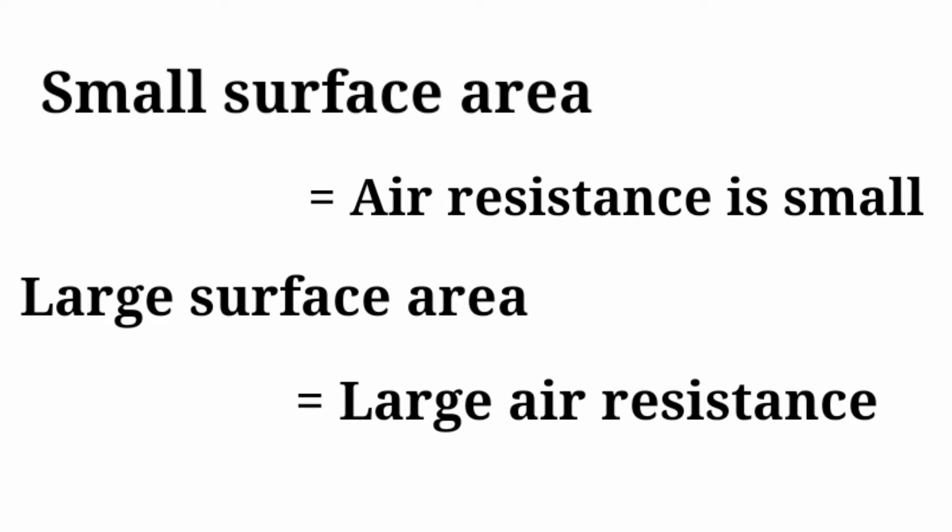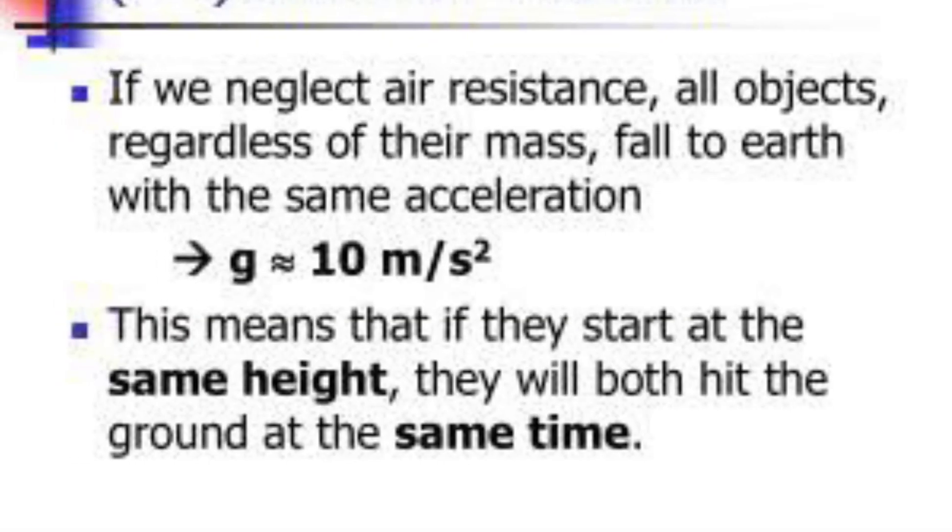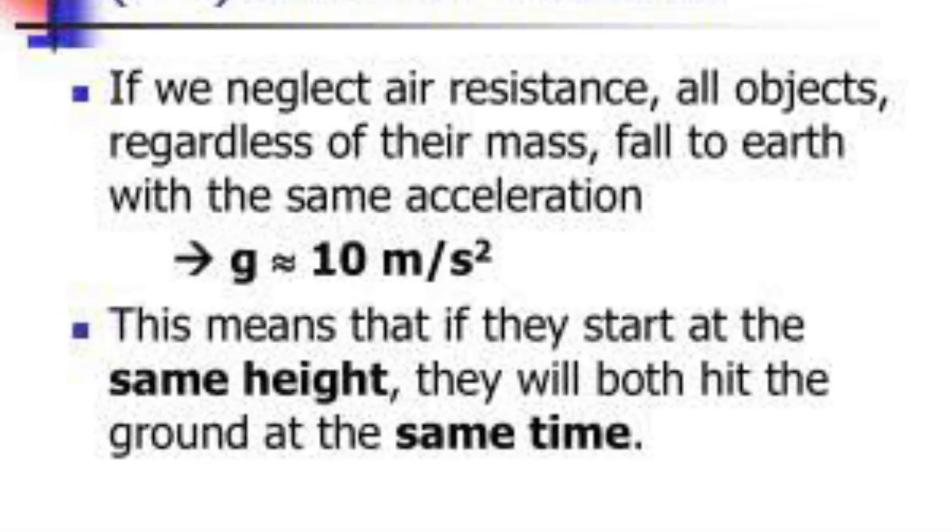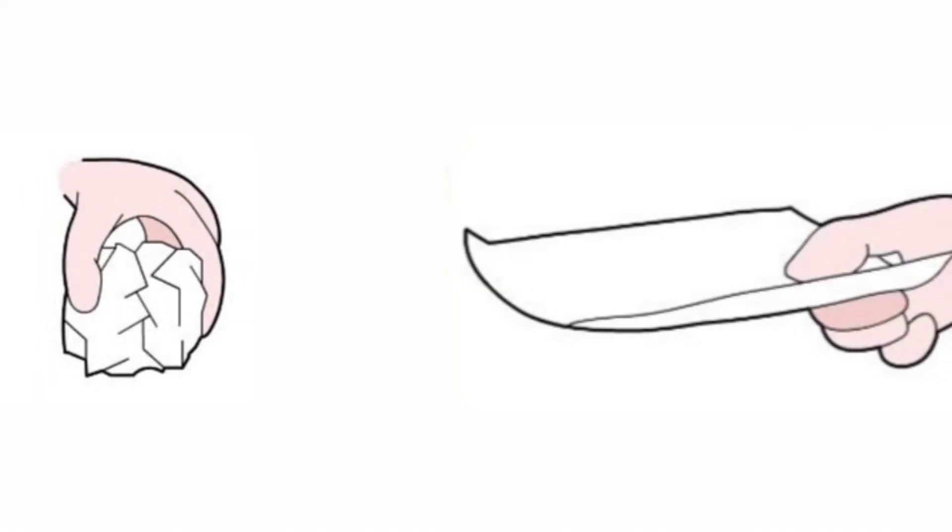Now suppose if we neglect air resistance, then all objects regardless of their mass fall to earth with the same acceleration. It means that if they start at the same height, they will both hit the ground at the same time.